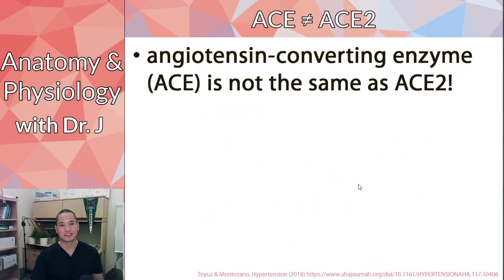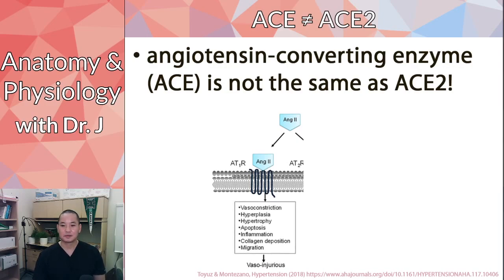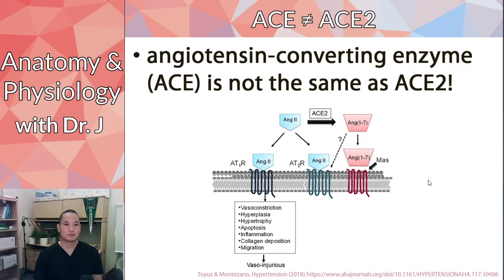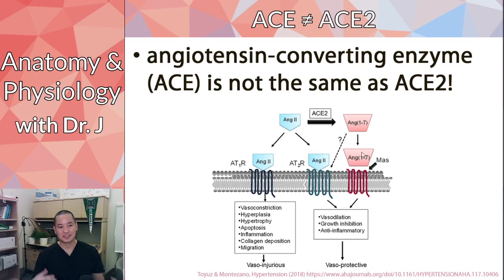Don't confuse ACE with ACE2 — they are distinct. This is relevant to COVID-19 being described as a cardiovascular disease. ACE2 is involved in that context. While angiotensin 2 causes vasoconstriction and increases blood pressure, the peptides produced by ACE2 — like angiotensin 1-9 and 1-7 — actually do the opposite: they cause vasodilation and decrease blood pressure. This is why there's a strong correlation between vascular disorders and COVID-19; the virus disrupts this whole system, though scientists are still studying exactly how.